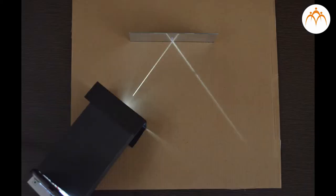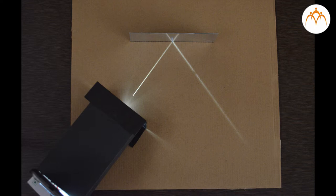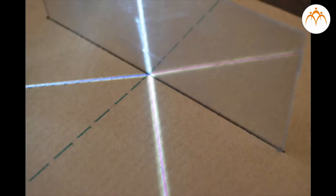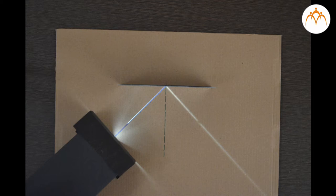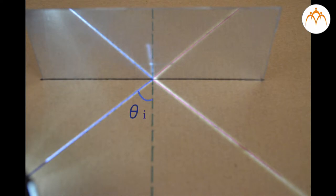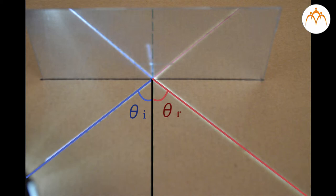If a ray of light could be observed approaching and reflecting from a flat mirror, then the behavior of the light as it reflects would follow a predictable law known as the law of reflection. Draw a perpendicular at the point where incident ray and reflected ray meet. This is called the normal line. This normal line divides the angle between incident ray and reflected ray into two equal angles. The angle between incident ray and normal is known as the angle of incidence. The angle between reflected ray and the normal is known as the angle of reflection.